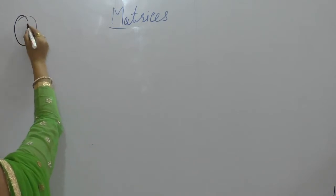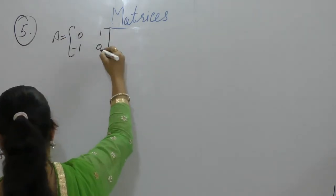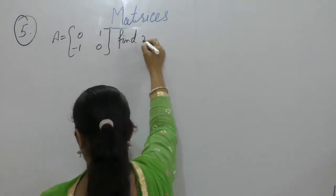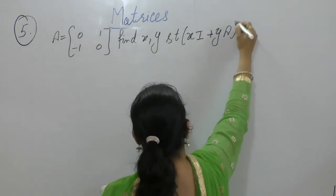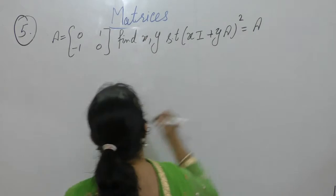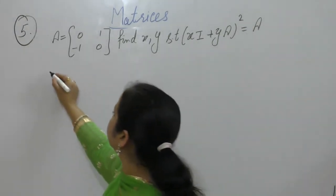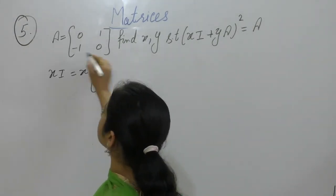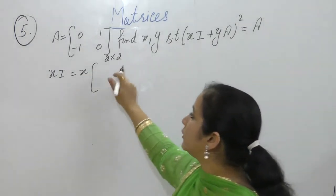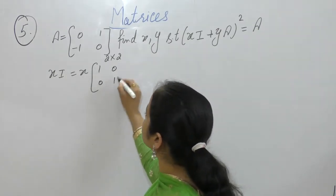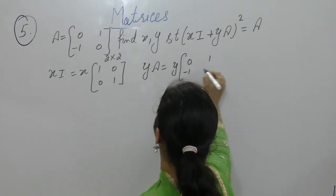Question 6: If A is equal to [[0, 1], [-1, 0]], find x and y such that (xI + yA)² = A, where I is the identity element. Since this is a matrix of order 2×2, we will take the identity element of order 2×2. So xI plus yA, where A is [[0, 1], [-1, 0]].